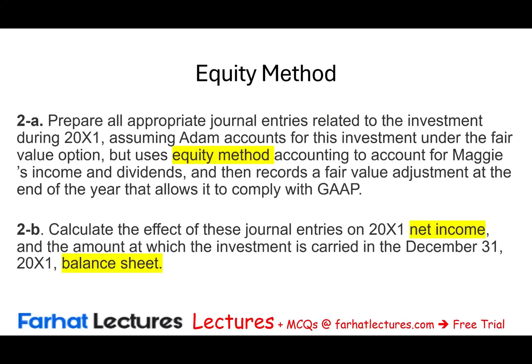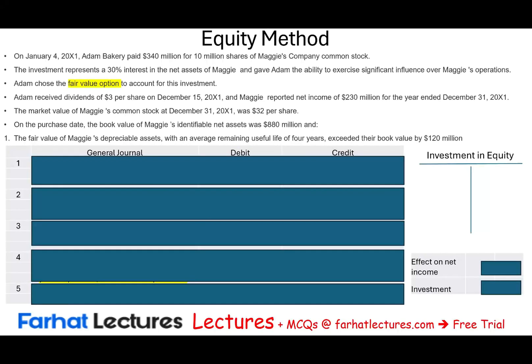Now we'll look at the same exercise using the equity method instead. Under the equity method, you increase your investment balance in proportion to the investee's reported income, and you reduce your investment in proportion to dividends received.